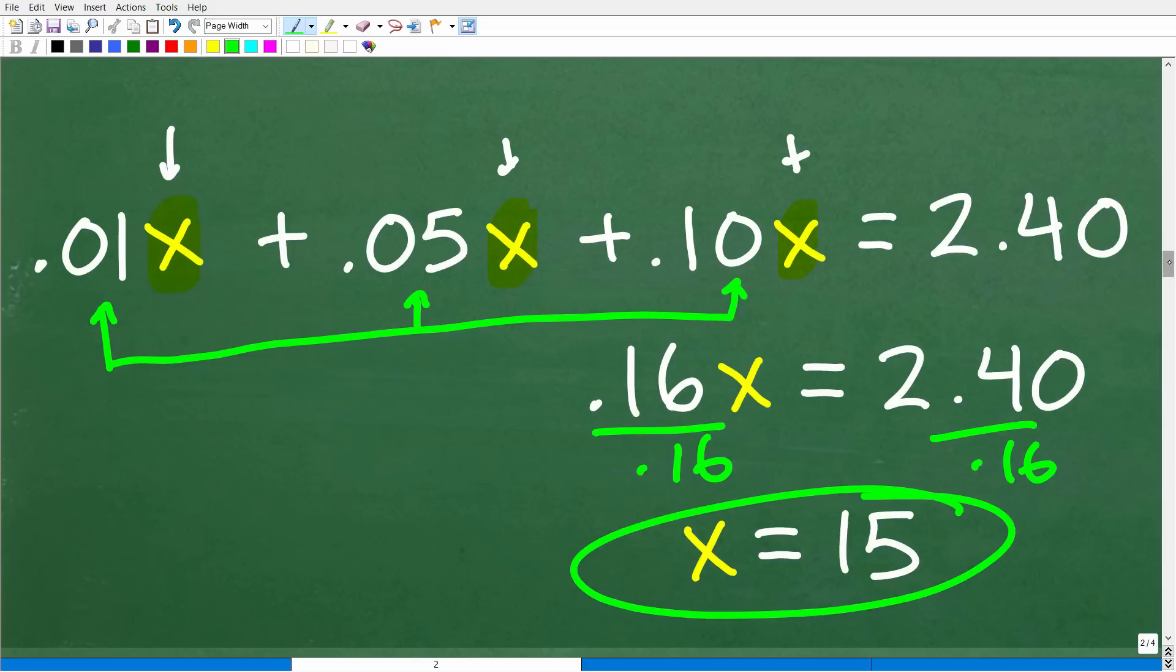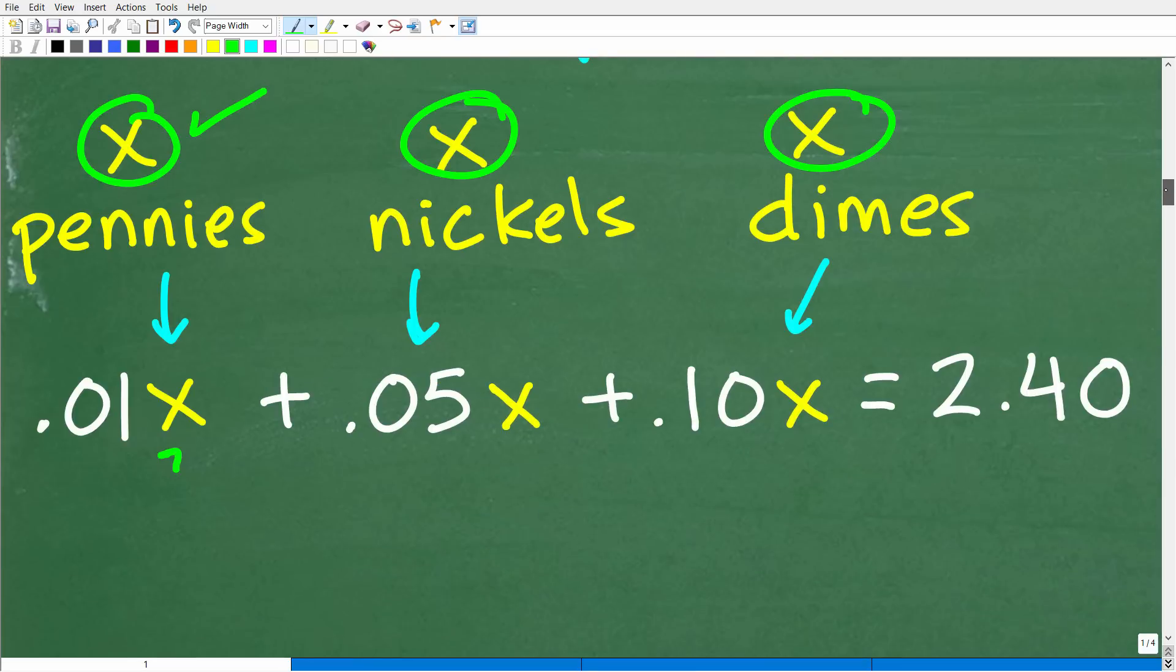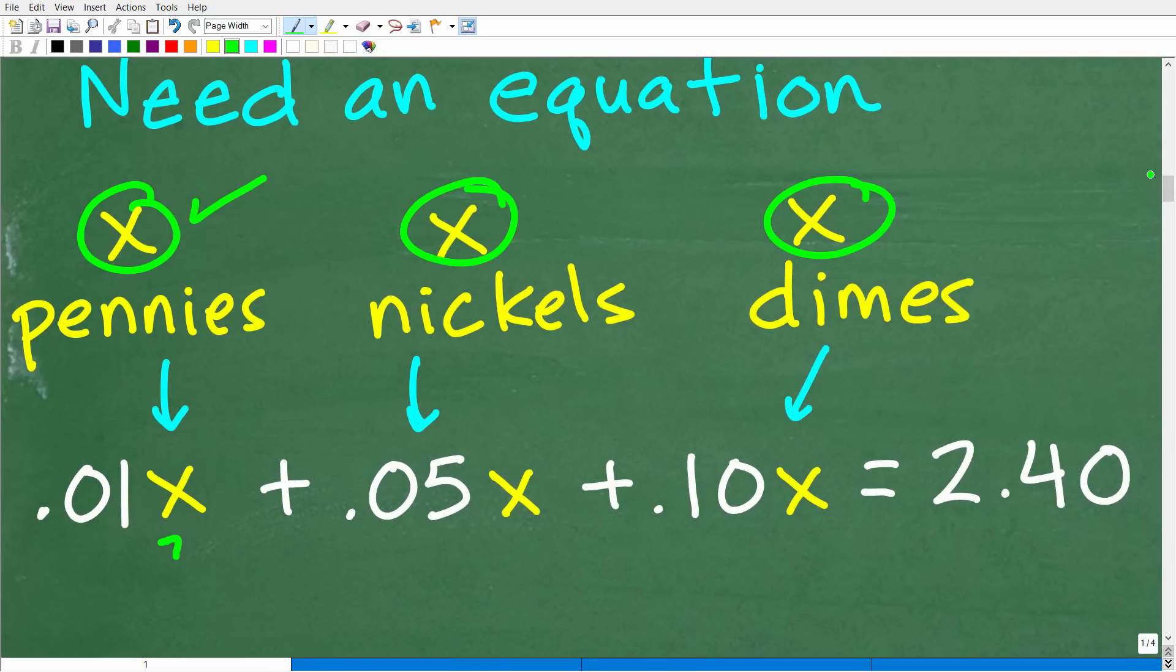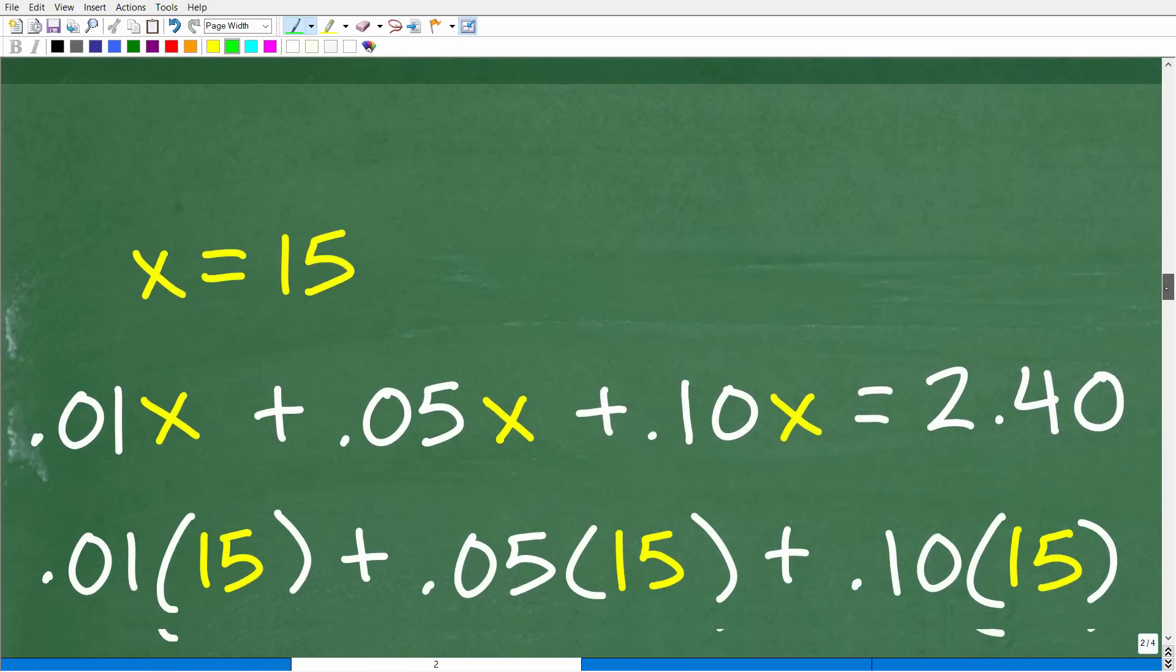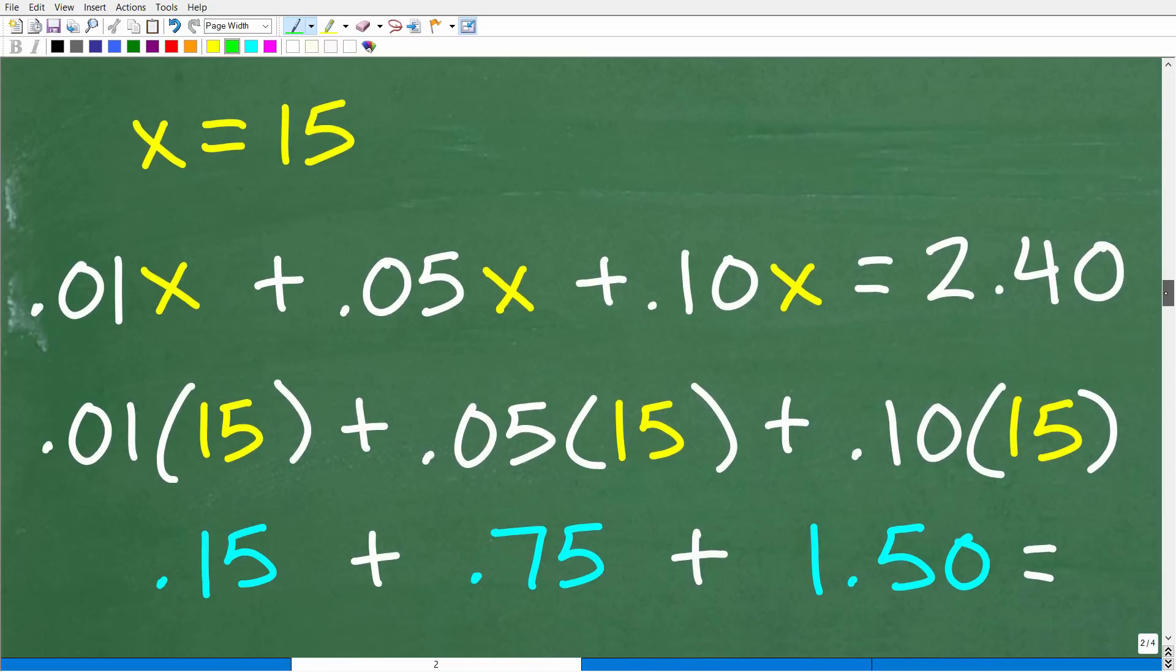So X is equal to 15. So what is that? Well, remember X up here. Okay. Was the number of coins. This is what we're looking for, but let's double check this. Let's make sure that this is a good answer and we can just go back to our equation.